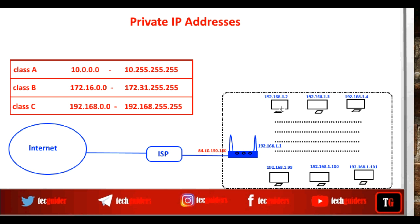If a device needs to communicate over the internet, or some other device at the other end of the internet needs to communicate with this device, the private IP address cannot be used — the public IP address must be used. The translation from public to private or vice versa is made possible by a process called Network Address Translation (NAT).